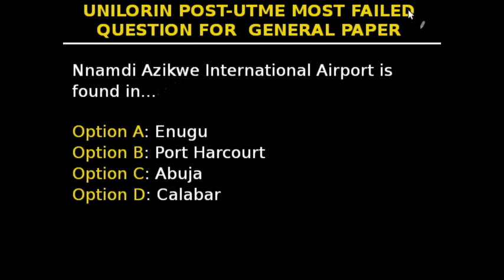This is question 32 of our series, and the question says: Nnamdi Azikiwe International Airport is found in — option A, Enugu; option B, Port Harcourt; option C, Abuja; and option D, Calabar.